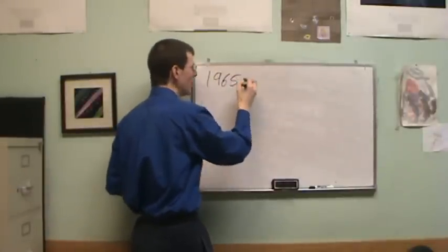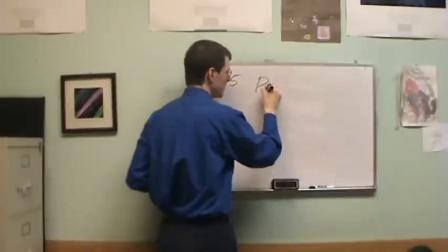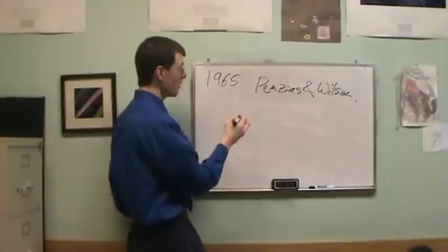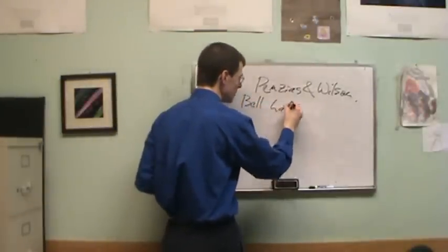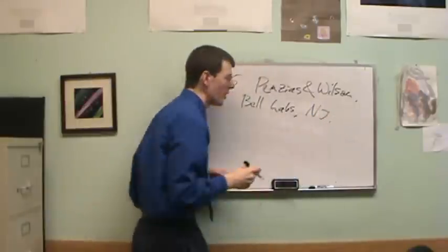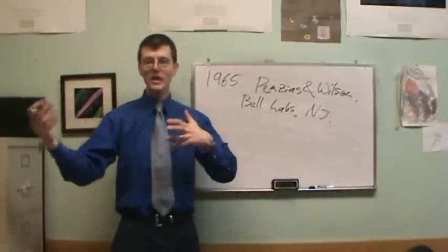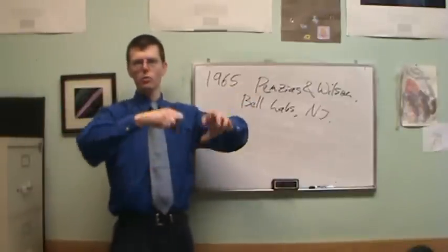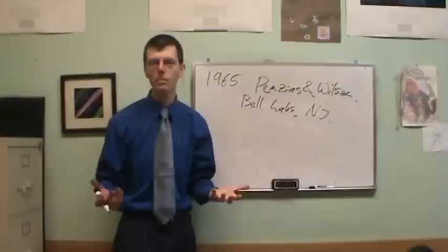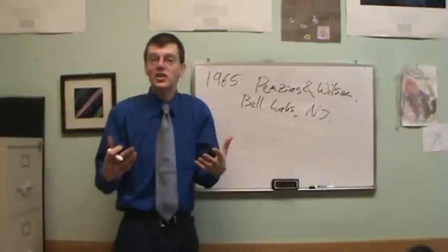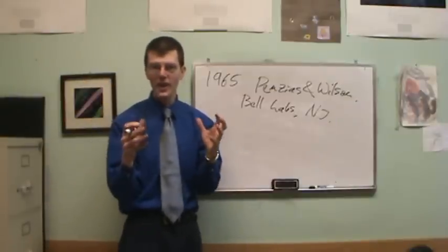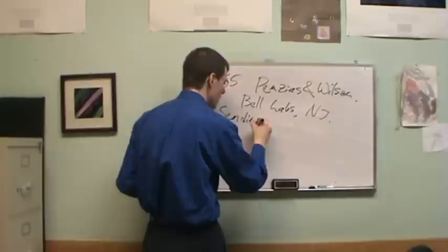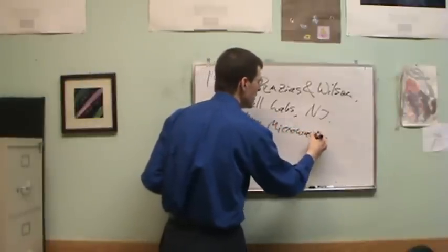1965. Arno Penzias and Robert Wilson. They are in New Jersey at Bell Labs. They are experimenting with new ways of sending signals back and forth. Remember, the early days of the space age, people are satellites and moon rockets and all this sort of thing. They're experimenting with new types of communication. They have this microwave antenna and they're trying to send microwave signals.